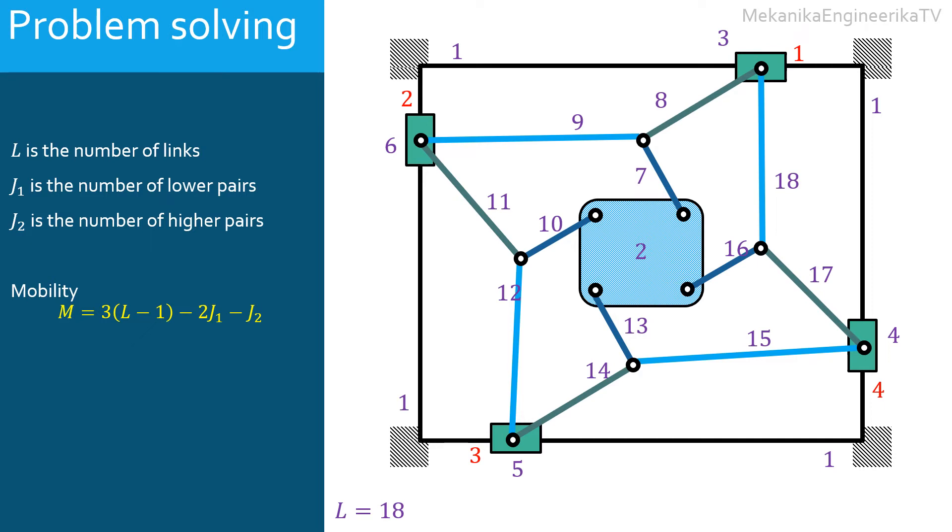Here the rotating joints which are connecting the quaternary link to the bars 7, 10, 13, and 16 are simple. Each should be counted once. All the remaining 8 rotating kinematic pairs are of second order. Thus each one should be counted twice.